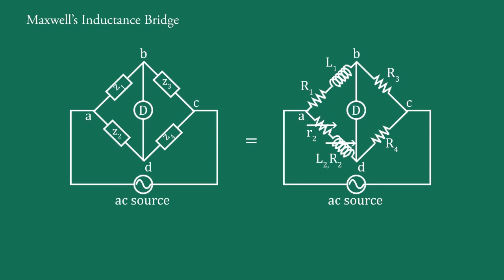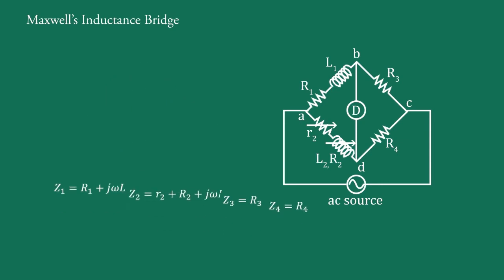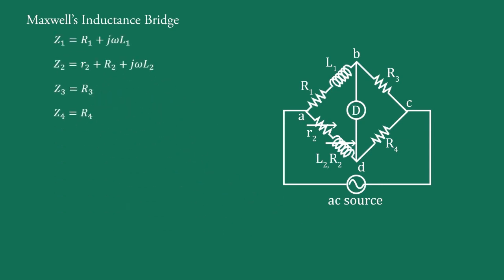Comparing the components of this bridge, we find: Z1 = R1 + jωL1, Z2 = r2 + R2 + jωL2, Z3 = R3, and Z4 = R4.